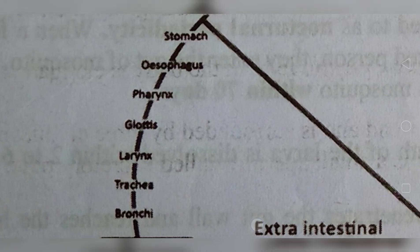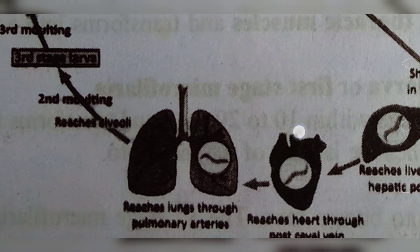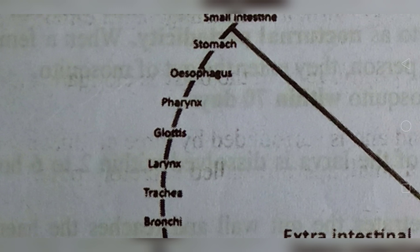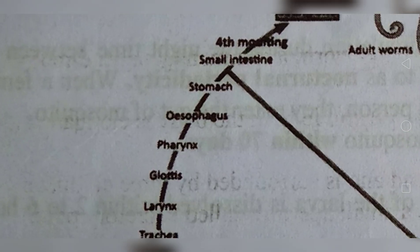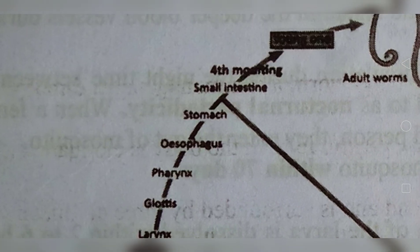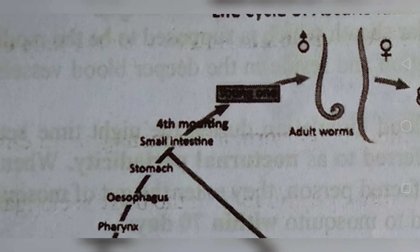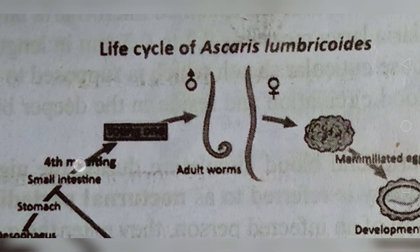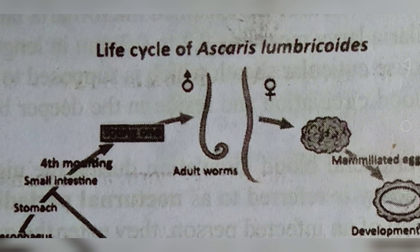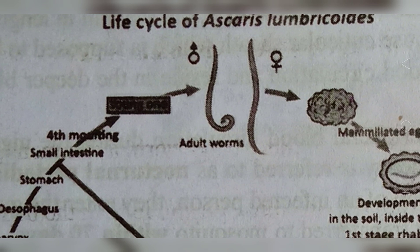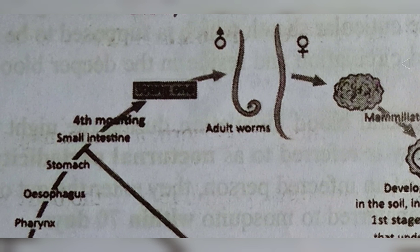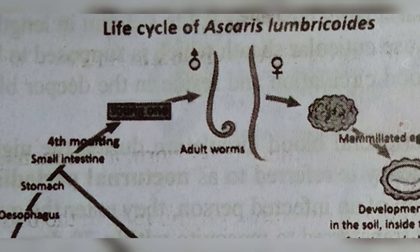After the fourth-stage rhabditiform larva, no further moulting occurs. The larvae enter the bronchi, trachea, larynx, glottis, pharynx, esophagus, stomach, and then the small intestine, where they undergo the fourth moulting to form new adults. After 8 to 10 weeks the male and female worms mature, undergo copulation, and produce eggs. These eggs enter human beings through contaminated food and water, then travel to the liver, heart, lungs, and back through the esophagus, stomach, and small intestine, completing the cycle. This is the life cycle of Ascaris lumbricoides.